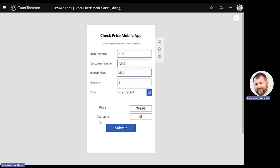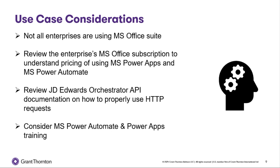Let's look at some things you need to consider if you are going to build out a Power App like this. First of all, not all enterprises are using the Microsoft Office suite, so that is a requirement first and foremost. Then you should review the subscription model that you have with Microsoft Office and the pricing of Power Apps and Power Automate. Thirdly, take a look at the Orchestrator API documentation and how to properly use the HTTP request to call it from Power Automate and also get a response back from Orchestrator Studio to display it in your Power App. Finally, if you're not familiar with using Power Automate and Power Apps, consider getting some training or going on YouTube to watch videos and get up to speed on how to use those tools.